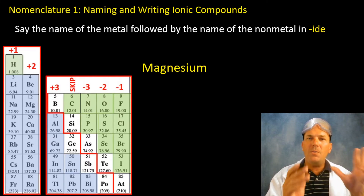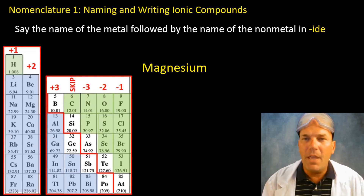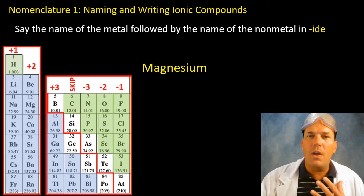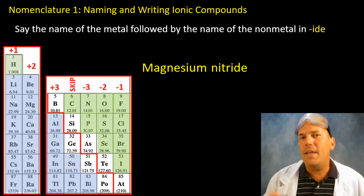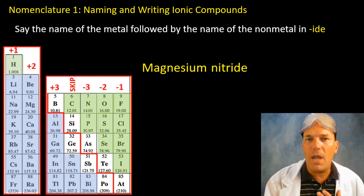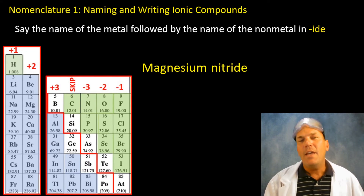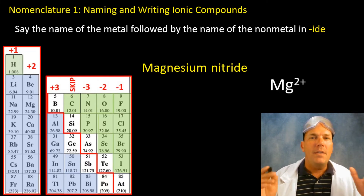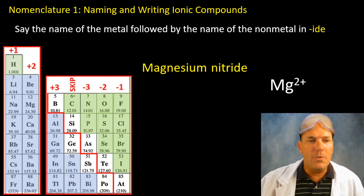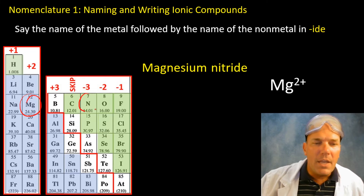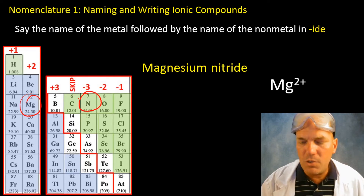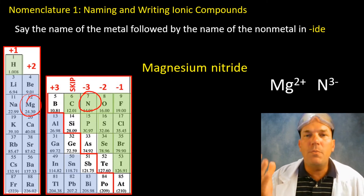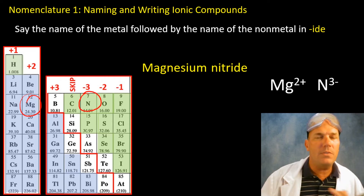Now try to write this ionic compound yourself. The metal is magnesium — find it on the periodic table and indicate its charge. The anion is nitride — find that on the periodic table and indicate its charge. Magnesium is in group two, so it has a plus two charge. Nitrogen has a minus three charge as its anion. We now have to find a way to balance these charges so they cancel out.